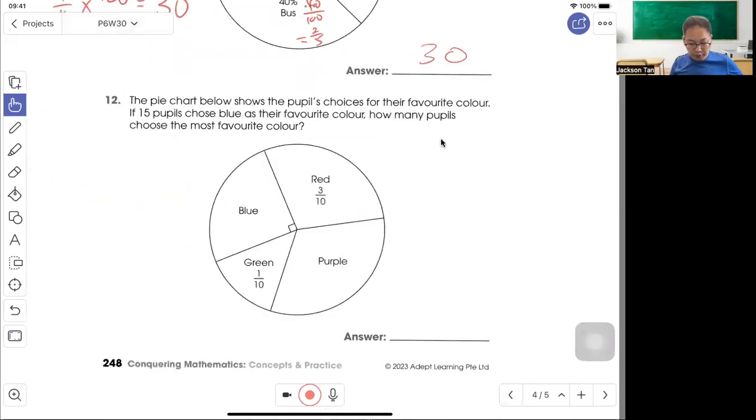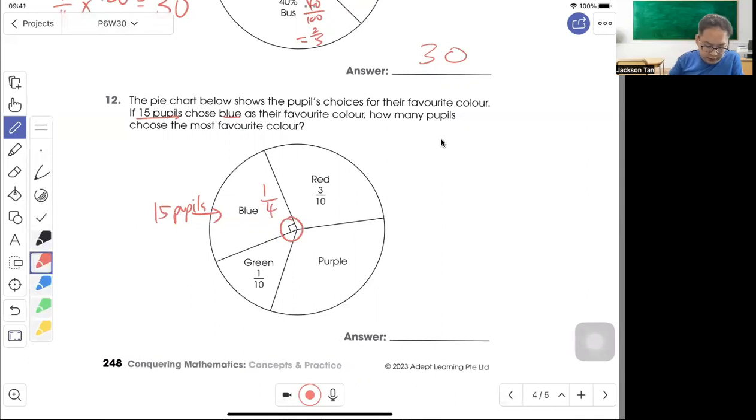Question 12. The pie chart below shows the pupil choice for their favorite color. 15 pupils choose blue. How many pupils choose the most favorite color? So if you look 90 degrees, so it's 1 out of 4. So purple seems the largest, right? So let's find the fraction. So 1 whole minus 1 quarter minus 3/10, that gives you 7 out of 20.